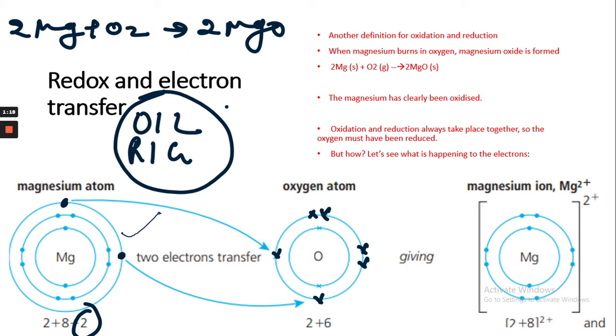We can learn this with the mnemonic OIL RIG: Oxidation Is Losing of electrons, Reduction Is Gaining of electrons. So magnesium has clearly been oxidized and we can see oxidation and reduction always take place together, so the oxygen must have been reduced. But how? We can see with this example.